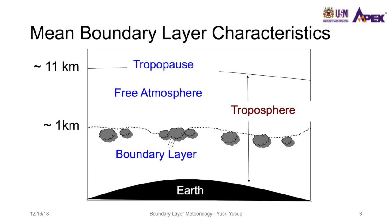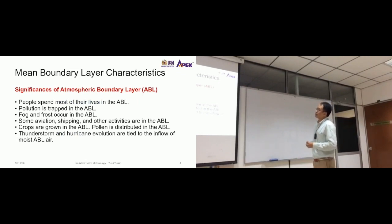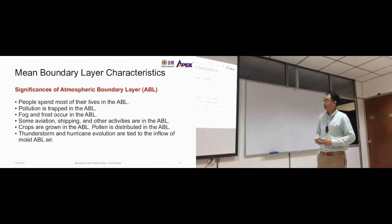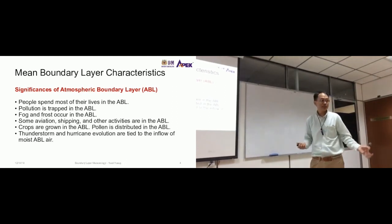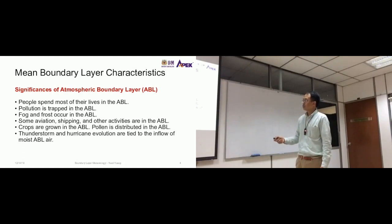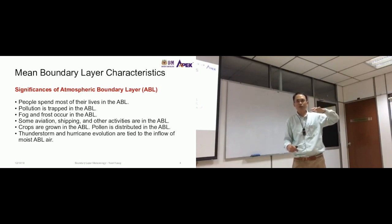The layer under study here is this boundary layer, a surface as close to the earth. This is the layer that we live in, that we model in. For example, your air pollution modeling is modeling the dispersion of pollution within the boundary layer. So why is this boundary layer important? People spend most of their lives in the atmospheric boundary layer. I'm going to use this ABL acronym quite a lot. Pollution is trapped in the ABL.